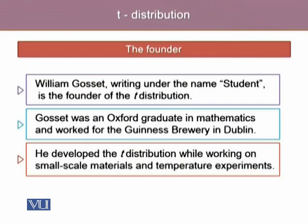This distribution was introduced by William Gosset, who wrote under his pseudonym as Student. Gosset was an Oxford graduate in mathematics and worked for the Guinness Brewery in Dublin. He developed the T-distribution while working on small-scale materials and temperature experiments.